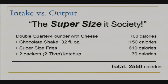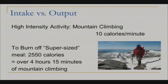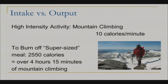It's important to understand that we can't outrun a bad diet. We have to make changes to our diet — we can't just rely on physical activity. To burn a meal like that off, you would have to do something like high-intensity mountain climbing, burning ten calories a minute, for four hours and fifteen minutes. If you can't do mountain climbing, you'd have to walk approximately thirty miles to burn a meal like that off. So remember, we can't outrun that bad diet.